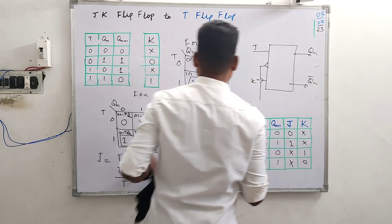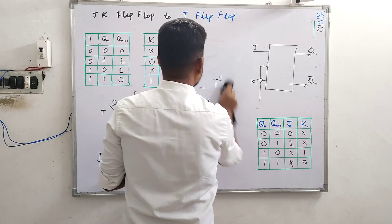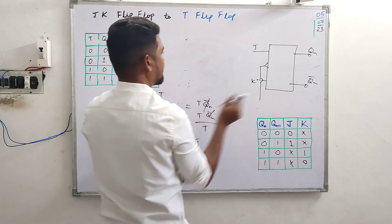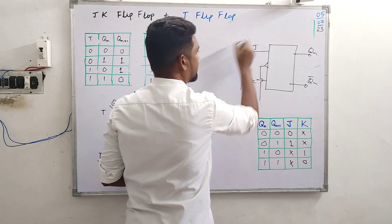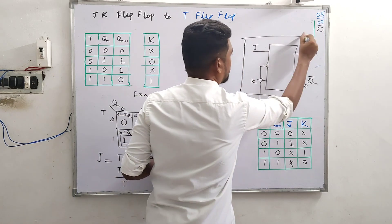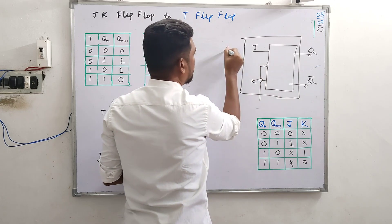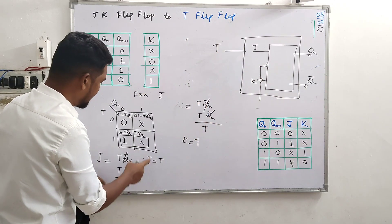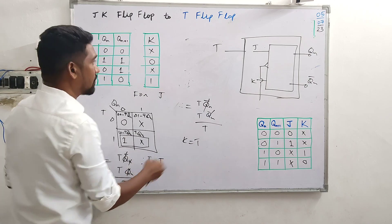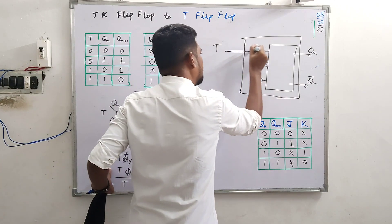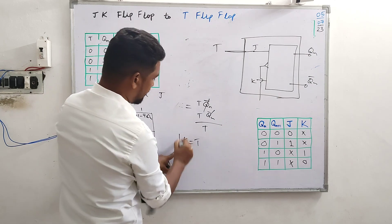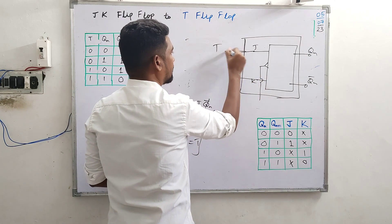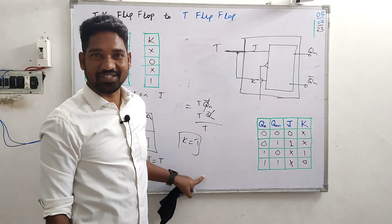So the given flip-flop is JK with J, K, clock pulse, Q(n) and Q(n)bar. This flip-flop has to be modified. The final conversion result is: J = T and K = T. Straightaway, there's no negation or AND operation — J equals T and K equals T. This is the final conversion. Thank you for watching.